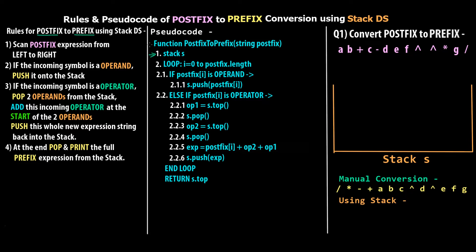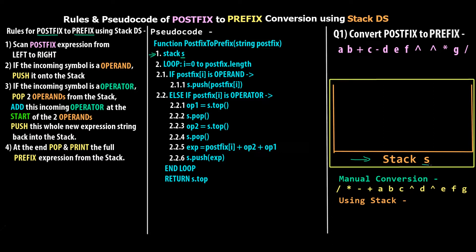We will go through the pseudocode since the rules and pseudocode are pretty much the same thing represented in two different ways — for every instruction in the pseudocode, we have a corresponding rule. Starting off with the function: we create a function named postfix_to_prefix that takes the postfix string. Step number one is we create a stack S, represented by this large container on the right hand side.